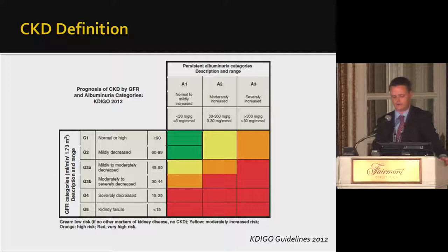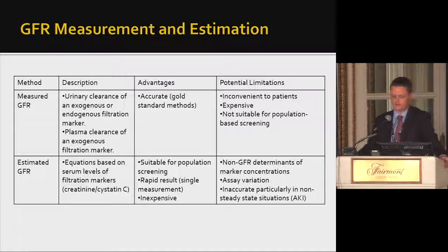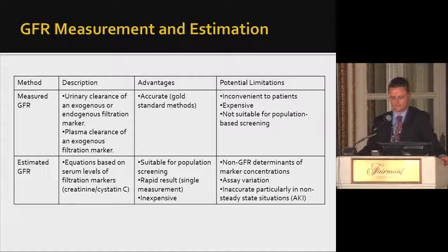To determine whether someone has CKD, we can measure or estimate GFR. Measuring GFR involves determining the urinary clearance of a filtration marker such as creatinine or inulin, or plasma clearance of exogenous markers. This method is accurate when complete collections are obtained, but it is inconvenient, expensive, not suitable for population-based screening, and repeated measures are unfeasible outside a research setting.